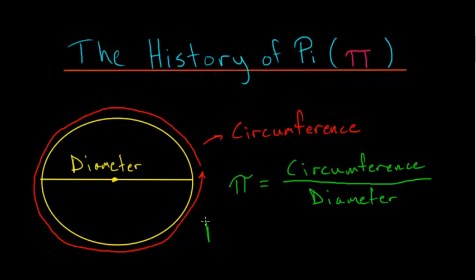So if the diameter, which I'll call D, is equal to 1, then the length around the circle, the circumference, which I'll call C, is equal to pi.